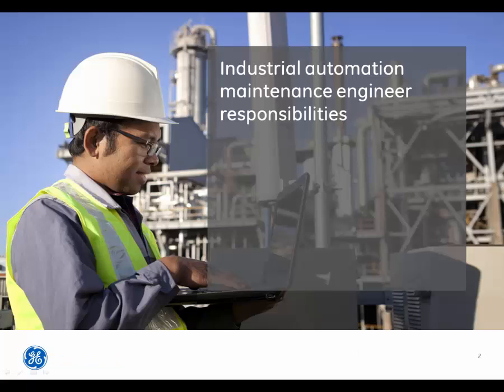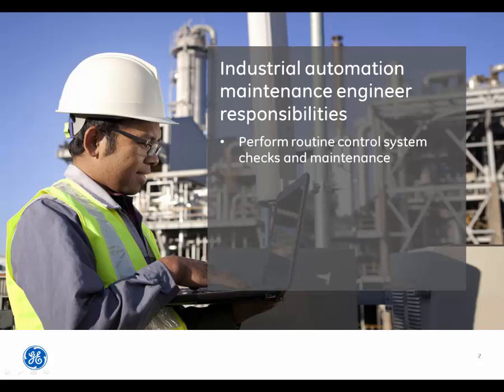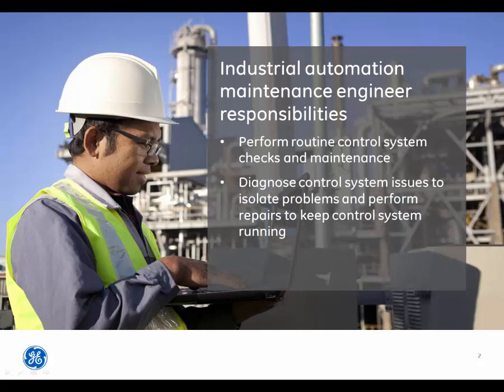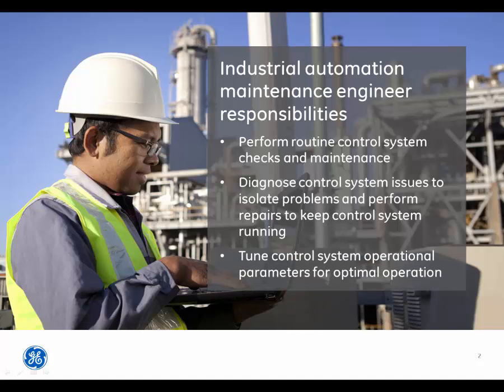An industrial automation maintenance engineer has the following responsibilities: perform routine control system checks and maintenance; diagnose control system issues to isolate problems and perform repairs to keep the control system running; and tune control system operational parameters for optimal operations.